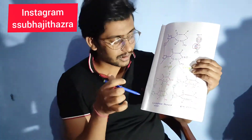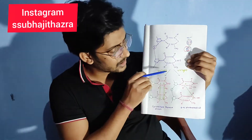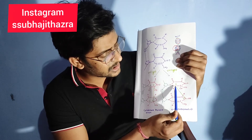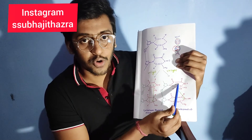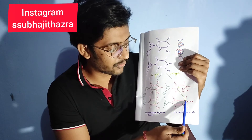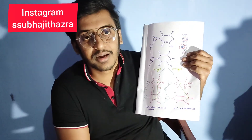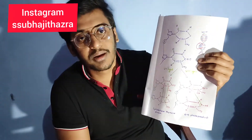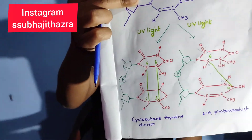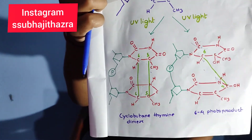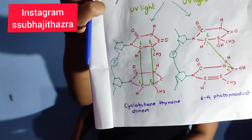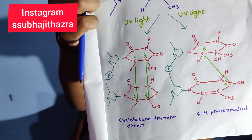The other type is the 6,4-photoproduct. It is called the 6,4-photoproduct because the bond forms between the 6 carbon of one pyrimidine and the 4 carbon of another pyrimidine residue. In the case of cyclobutane pyrimidine dimers, two covalent bonds are formed, whereas in the 6,4-photoproduct, only one covalent bond is formed.